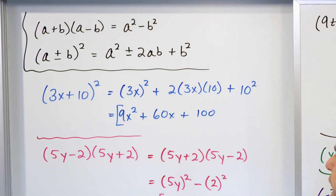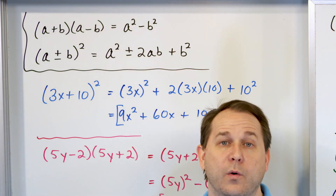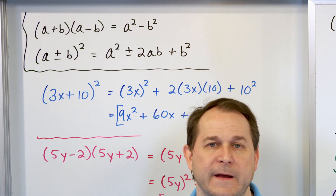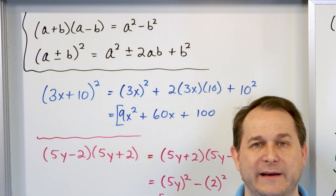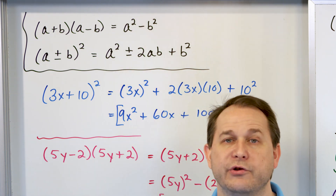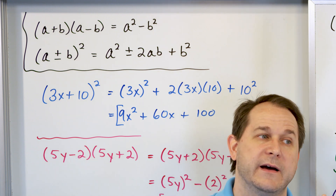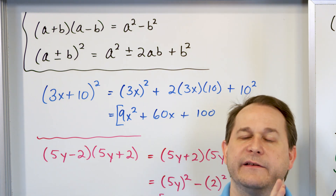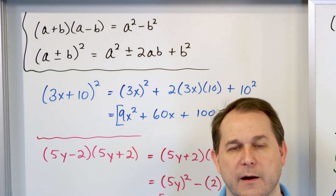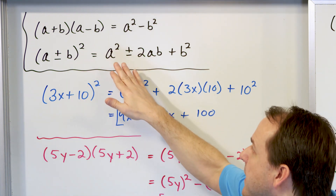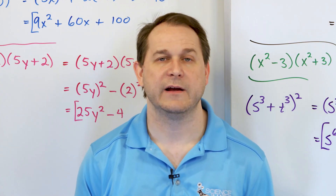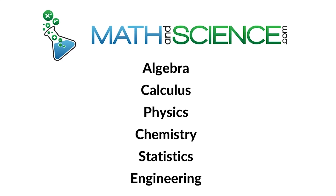Try to remember these special product rules. If you don't remember them, you can always do them by hand, but it's going to be handy because soon we'll be talking about factoring in algebra — basically going backwards from the multiplication we're doing now. It's very handy to have these in the back of your mind when doing factoring. Work problems to burn these into your memory, and we'll be using these same relations in the factoring section as well.